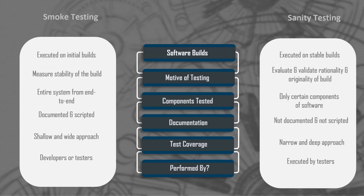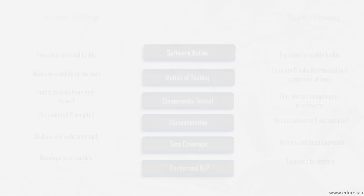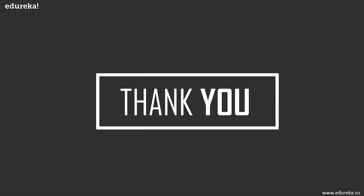With that, we've come to the end of the session. To recap: sanity testing tells you whether your software release merits further testing or is too flawed to proceed. It's performed when a new functionality, change request, or bug fix is implemented. Its scope is narrow and focused only on the functionalities that have been implemented or impacted by the change. Many people confuse sanity testing with smoke testing, so we also discussed the key differences between them. Thank you, and I'll meet you in the next session with another interesting topic.